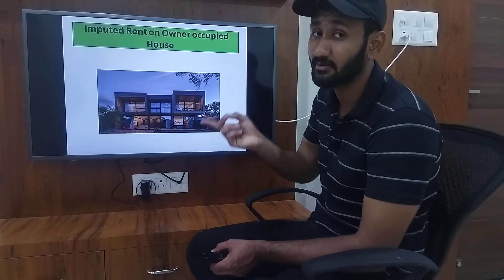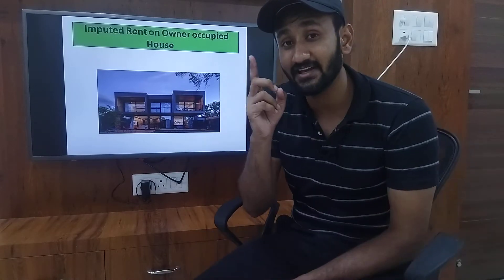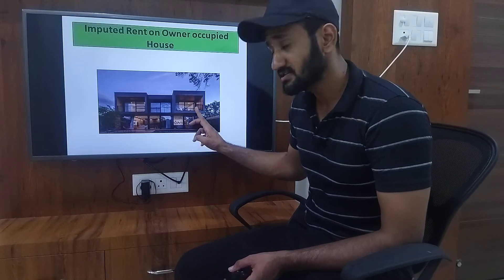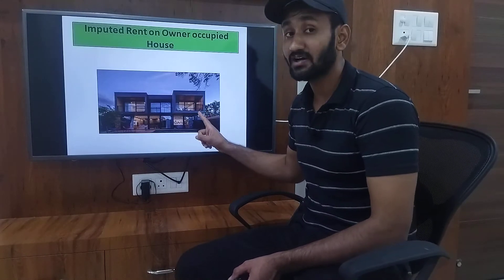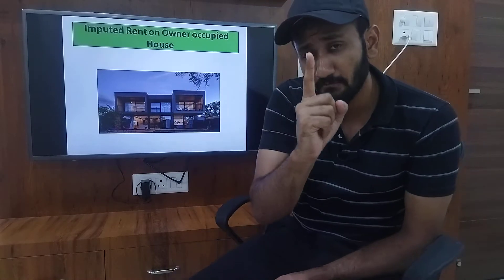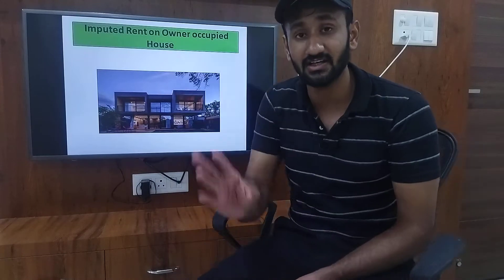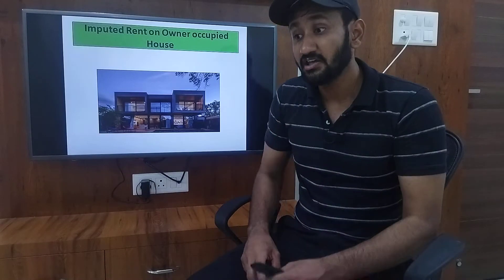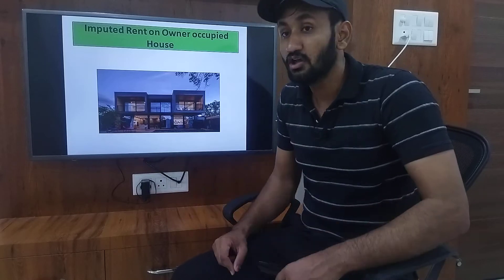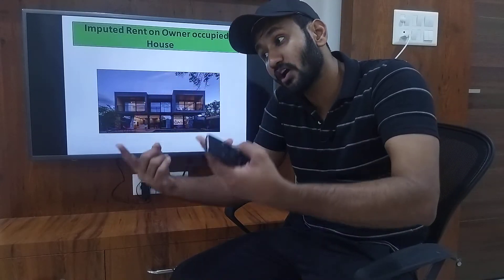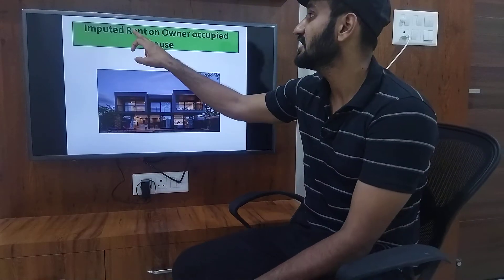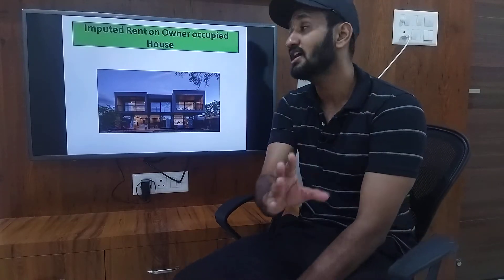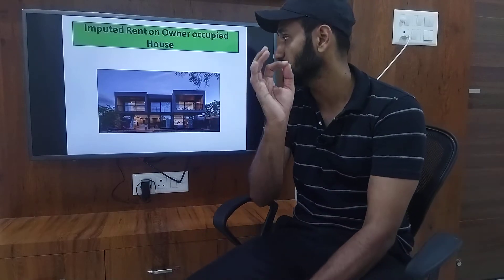The sixth precaution is also green — to be included. We already covered this in the value added method precautions class with the example of Raju's house and Sham. Raju paid actual rent of 20,000 per month to Sham. But Sham bought the house himself and didn't need to pay rent. The government says: if Sham hadn't bought the house, he would have had to rent it, so we count imputed rent on an owner-occupied house. This is also included in national income.